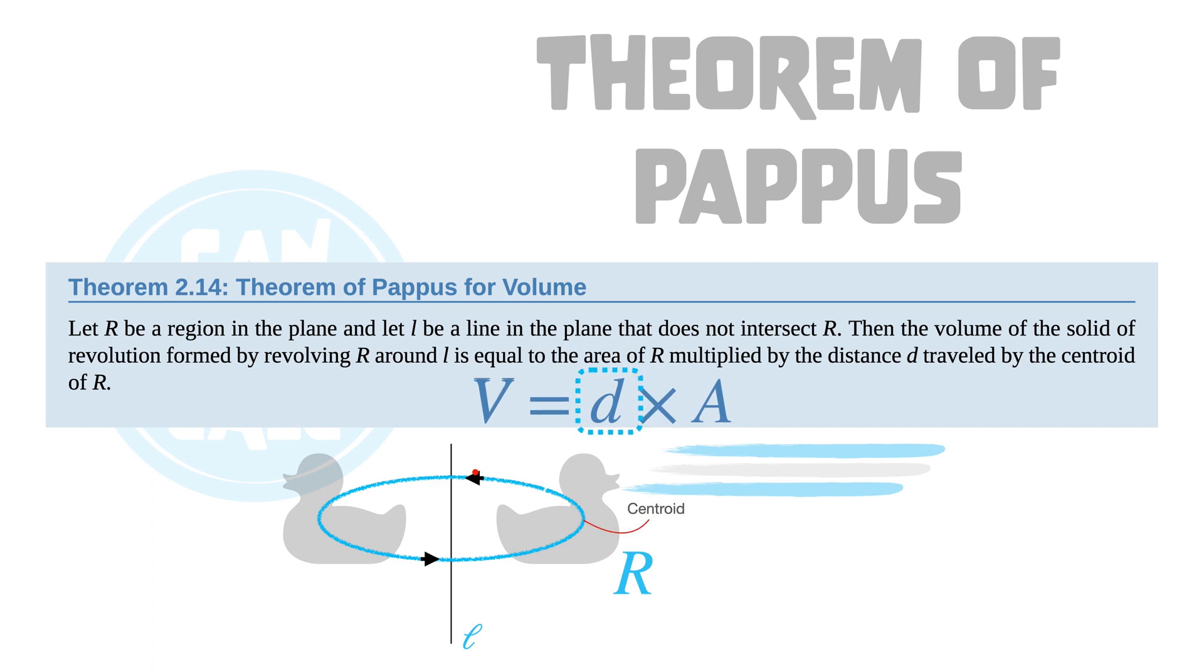The quantity d is the distance the centroid travels about the line. The centroid will trace out a circle. The formula for circumference is 2πr. That's what d is. The quantity A is the area of the region R.